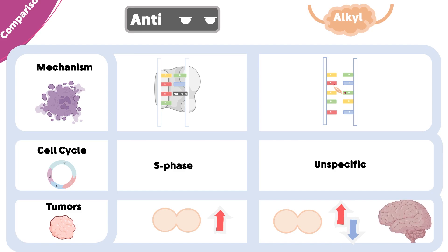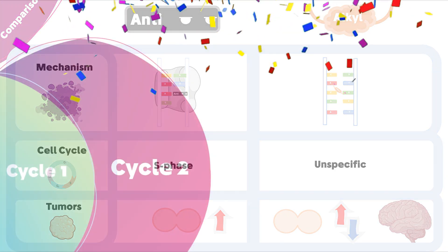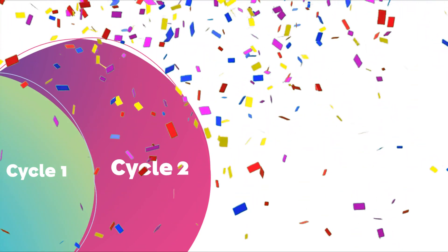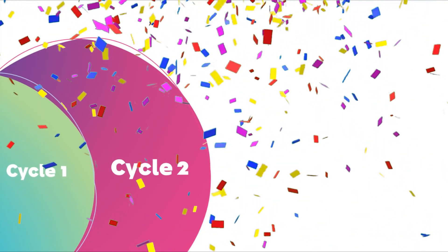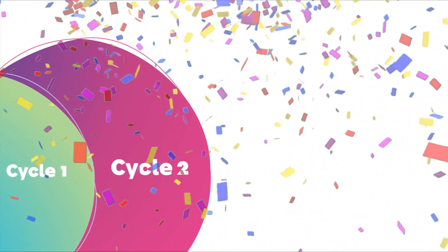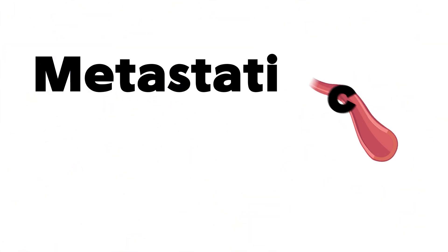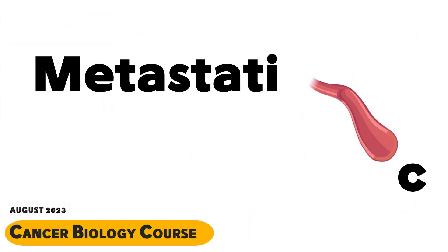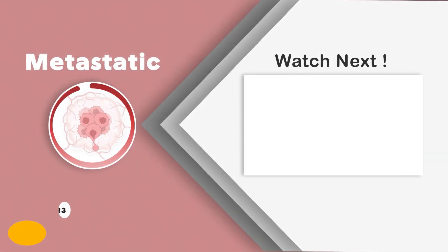This is one reason alkylating agents are prescribed for slow-proliferative brain tumors. Congratulations, you have successfully finished the two cycles of the anti-metabolites. If you are interested in cancer research and want a background in cancer biology, check the description for a course available in August 2023. What do you think: which is more effective, the anti-metabolites or the mitotic inhibitors?